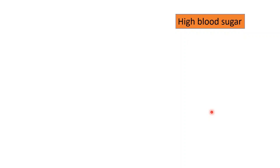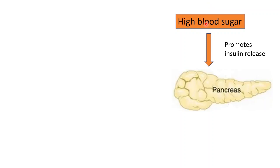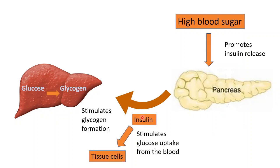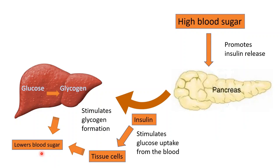Another example of homeostasis by negative feedback is controlling blood sugar levels. When blood sugar is high, this stimulates the pancreas to secrete insulin. Insulin targets the liver and body tissues — in the liver, it causes glucose to be absorbed from the blood and converted to glycogen. Insulin also stimulates body cells to absorb glucose from the blood. Together, the liver and body cells reduce blood sugar levels. The high blood sugar is the stimulus, and the response lowers it — that's negative feedback.